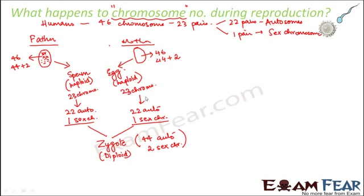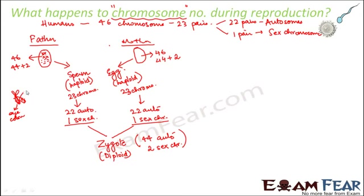From this we understand that the specialized sex cells — the sperm and the egg — each contain one representative of each type of chromosome, not the full pair. On each chromosome are located thousands of genes, and the number of chromosomes in a cell is fixed at 46. Each gene contains information about a particular characteristic or trait — for example, one gene may represent eye color and another may represent hair color.